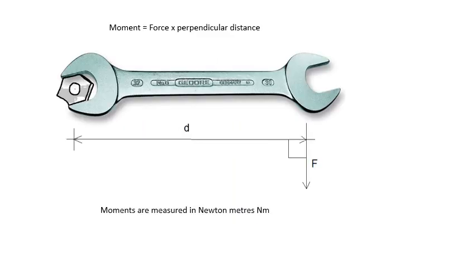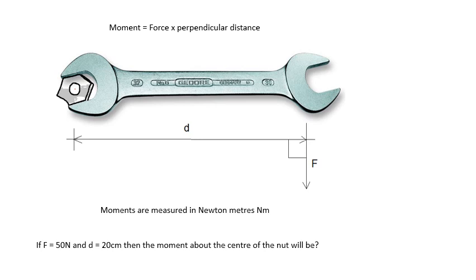How do we work out the size of the moment? Moment is force times perpendicular distance — the perpendicular being very important. This force here will produce a clockwise moment about the nut. Moments are measured in newton meters. So for example, if the force is 50 newtons and the distance is 20 centimeters, then the moment about the center of the nut will be 10 newton meters clockwise.